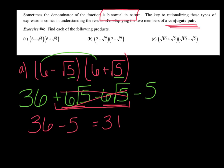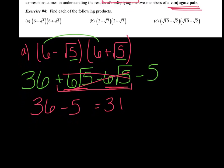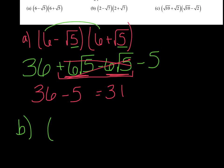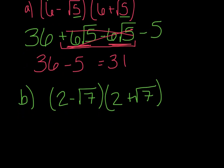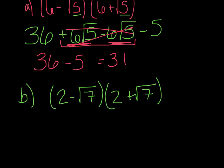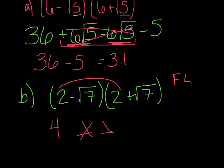Let's try the next one: (2 − √7) and its conjugate (2 + √7). Since they're conjugates, the middle terms are going to cancel, so we can go Florida style — first and last only. First is 4. The two middle terms cancel. And radical 7 times radical 7 is just 7. So I get a total of 4 minus 7, which is negative 3.